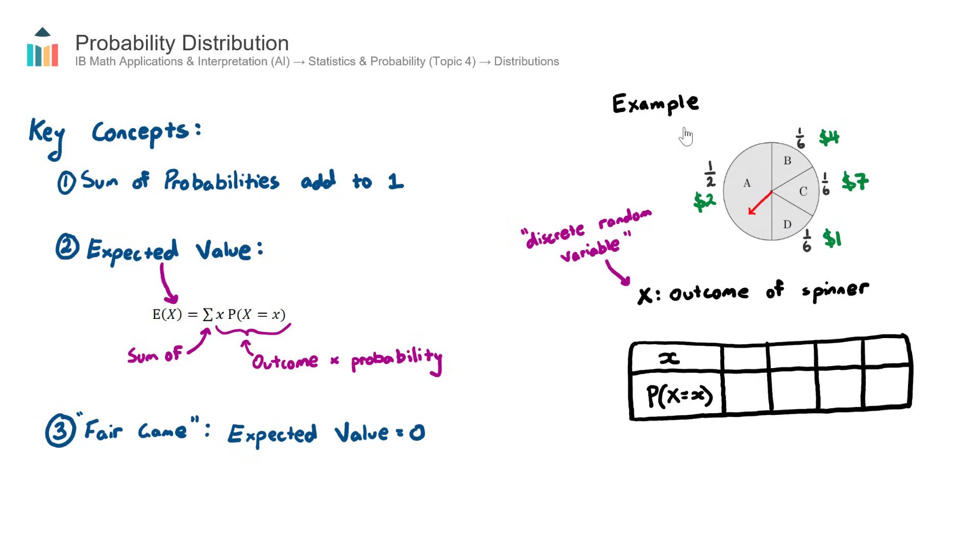In this example here, I have a spinner with A, B, C, and D. In the black here, I have the probabilities of each spinner. For example, the probability of spinning an A is one half or 50%, and the probabilities of spinning B, C, and D are one on six, or roughly 16.7%.